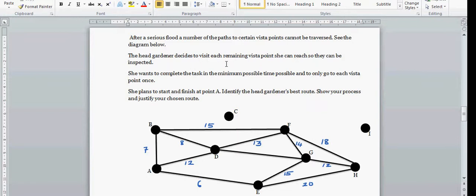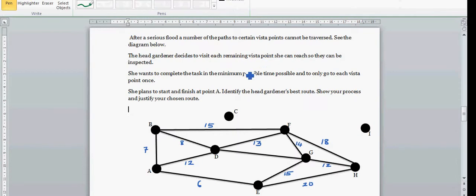The head gardener decides to visit each remaining vista point she can reach so they can be inspected. She wants to complete the task in minimum possible time and only go to each vista point once. She plans to start at point A and come back to A. So the problem is you want to start at A, visit each of the points, and come back to A in minimum time.